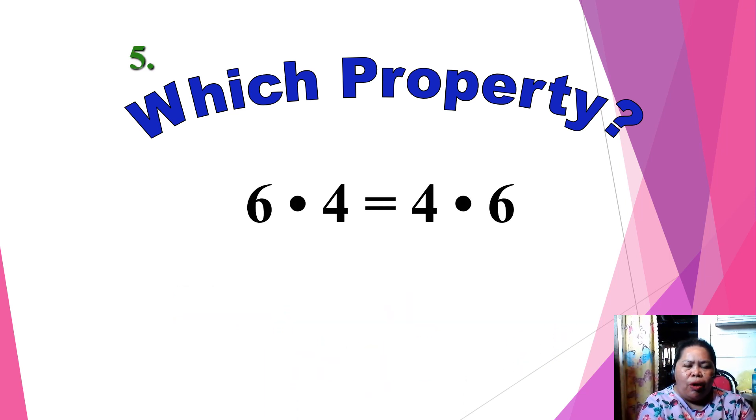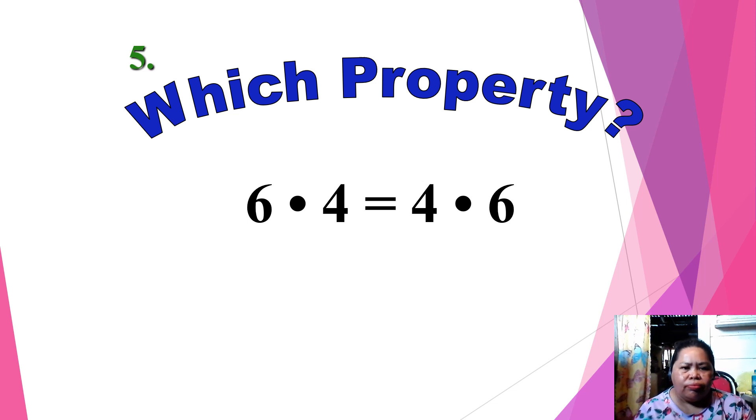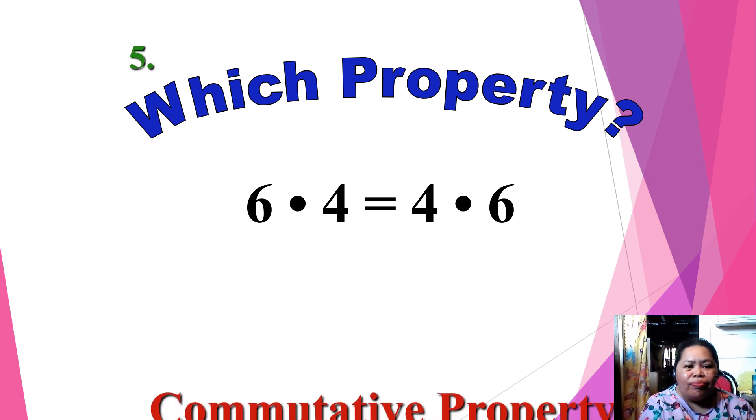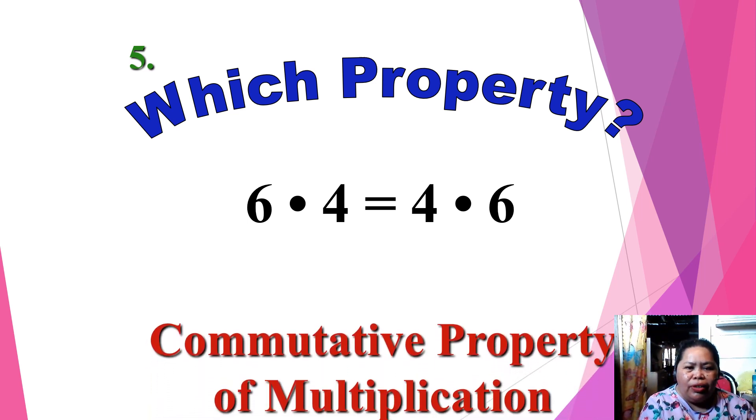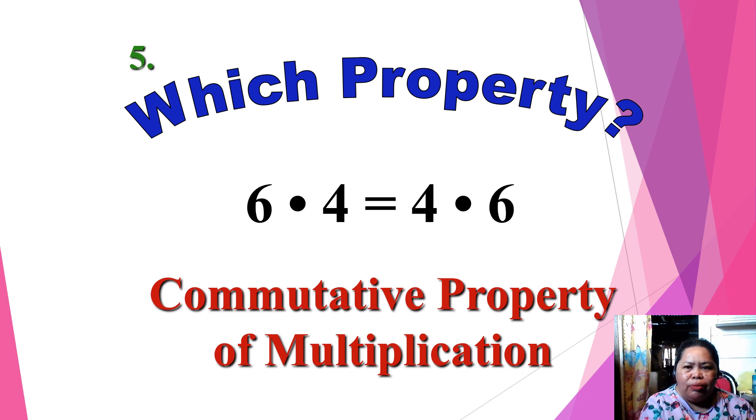Which property is this? 6 times 4 is equal to 4 times 6. What do you think? It is commutative property of multiplication. So I hope you learned from our lesson today. Now, it's not yet the end.